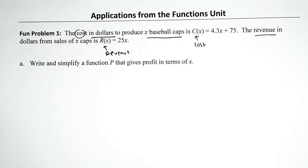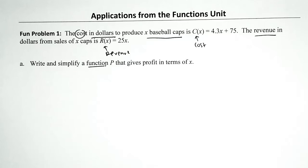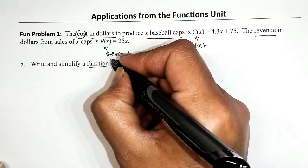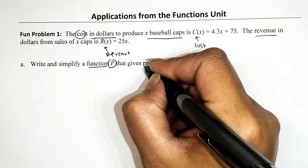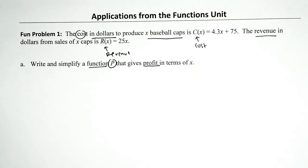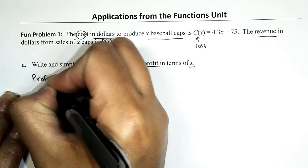So what do we want to do — we want to write a function. Functions have names, you know the popular ones: F, G, and H. But we are not given the liberty to name the function however we like — we have to use the name P, which is very appropriate because it says give me a function that gives profit, and the profit has to be written in terms of X.